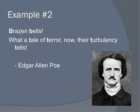Example number two, from Edgar Allan Poe: 'Brazen bells, what a tale of terror, now their turbulency tells.' We hear the repetition of the B's in the first line, and then the repetition of the T's in that second line. At the literal level, we identify he's using alliteration. But now we need to move to that interpretive level and say: why is he using that? Is it simply to add rhythm, or is there a deeper connection to the point he's trying to make with this poem? We have to start making those interpretations.